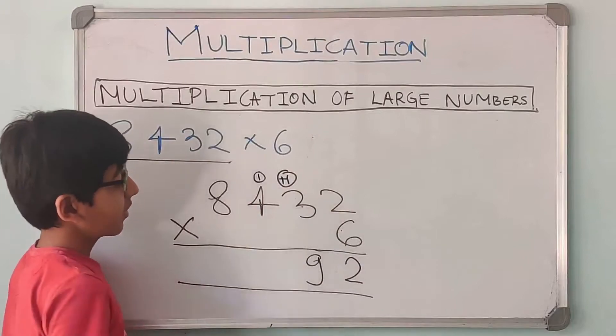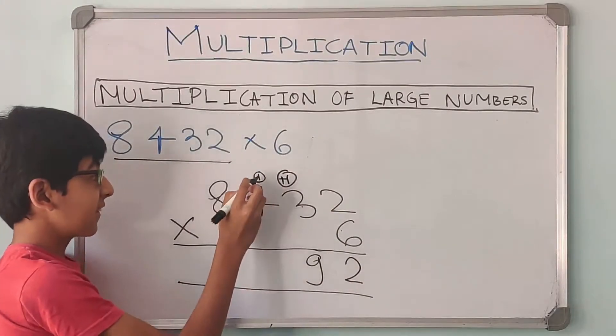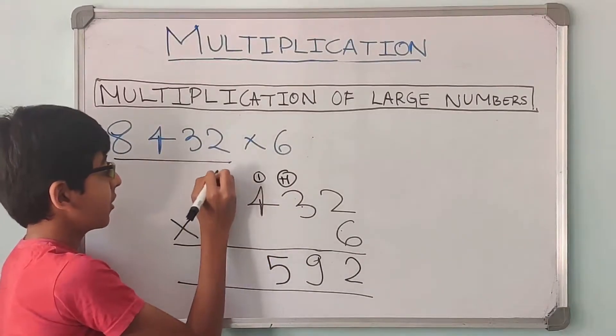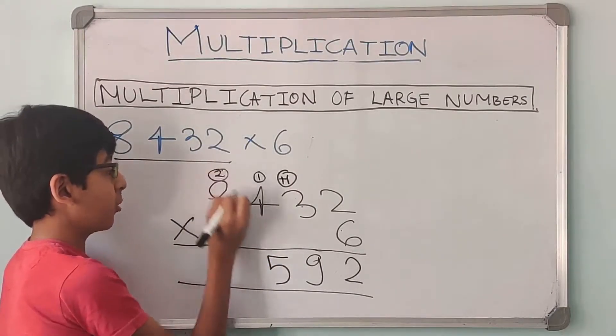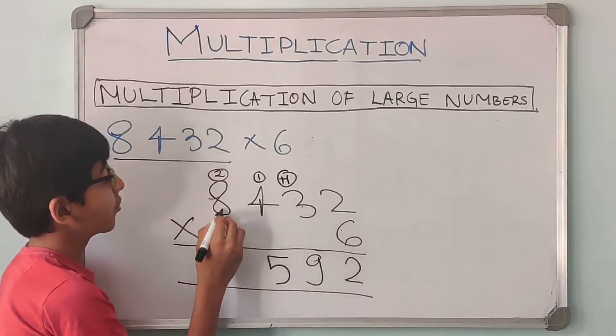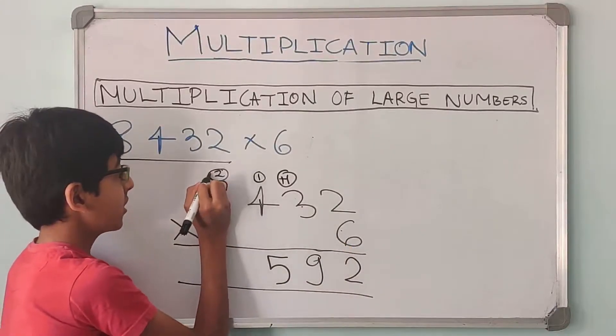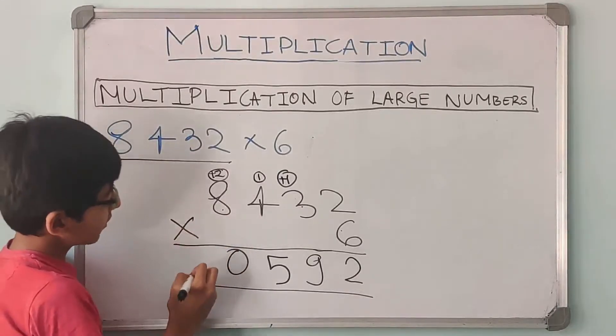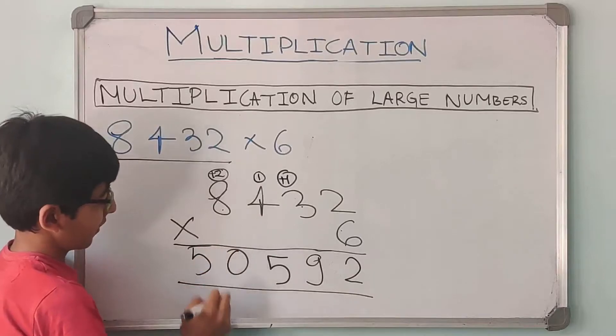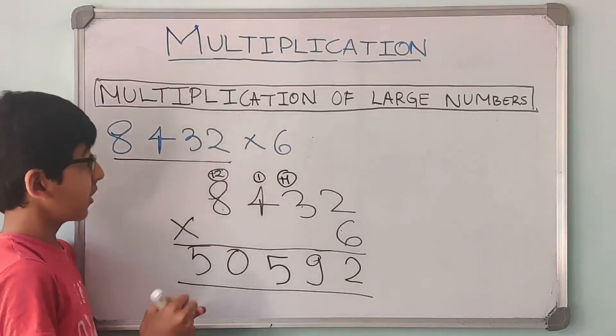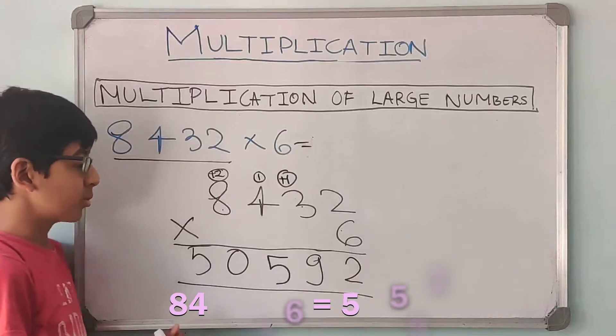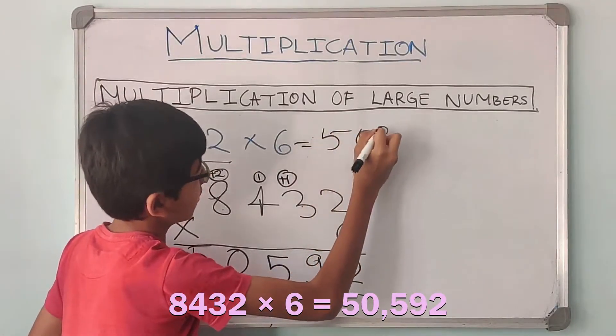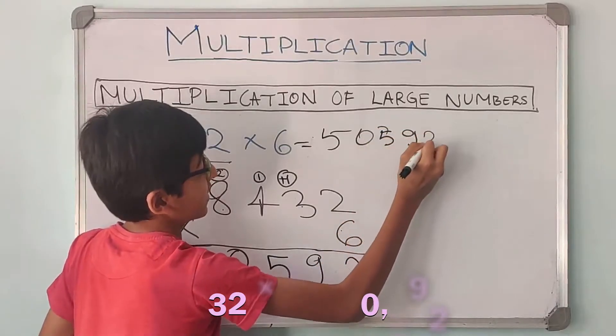6 into 4 is 24. Add this carry over, so 24 plus 1 is 25. 5 comes down and write the 2 on top. So 6 into 8 is 48. 48 plus 2 is 50. Now there is no other number, so we can write the 5 also over here. So we found out that 8,432 into 6 is 50,592.